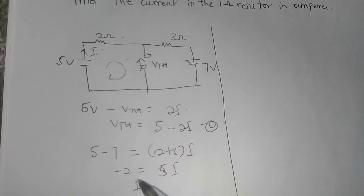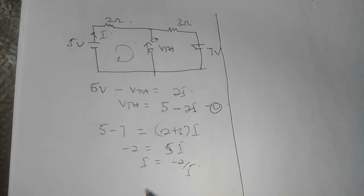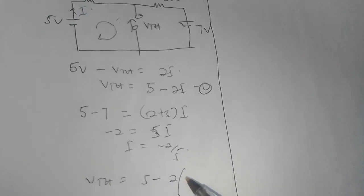Therefore my I is equal to negative 2 over 5. Once I get my I, I just put it into the first equation to get my VTH.